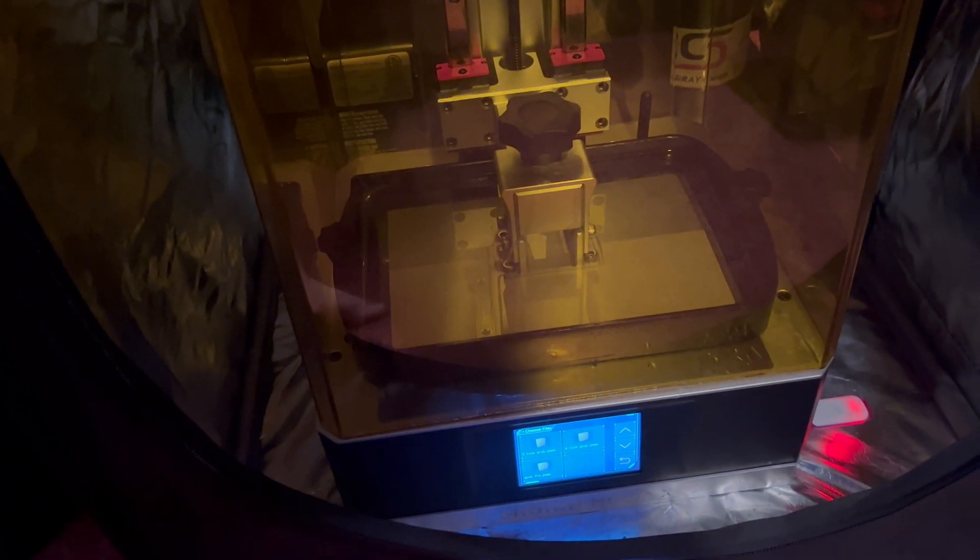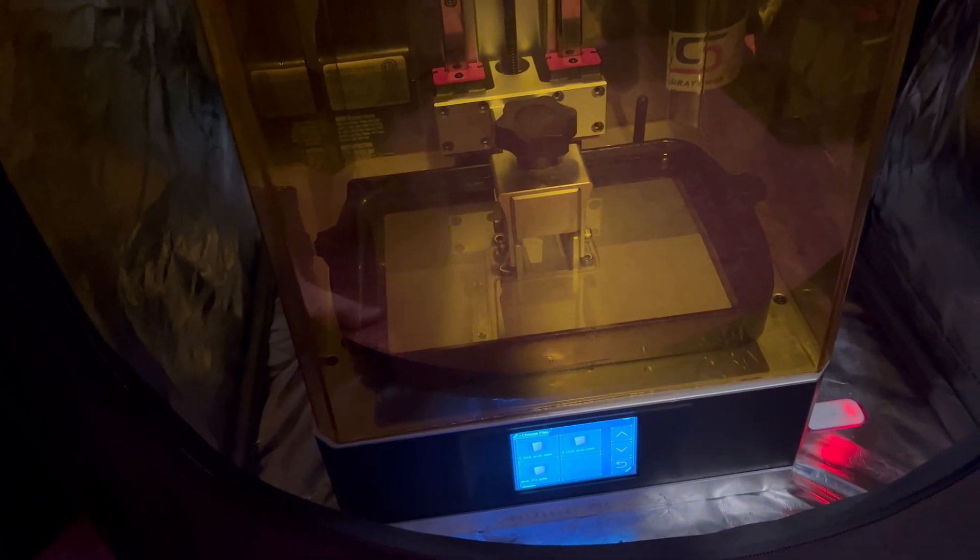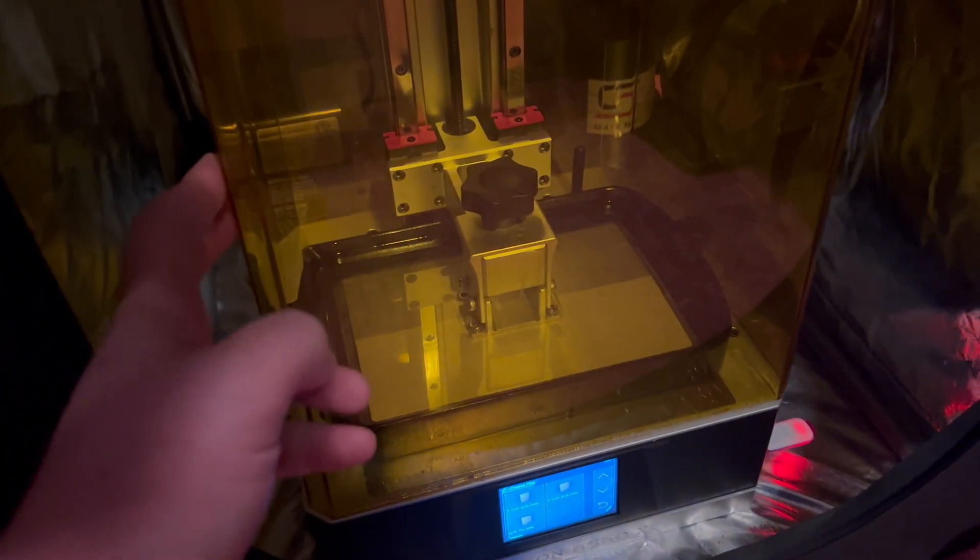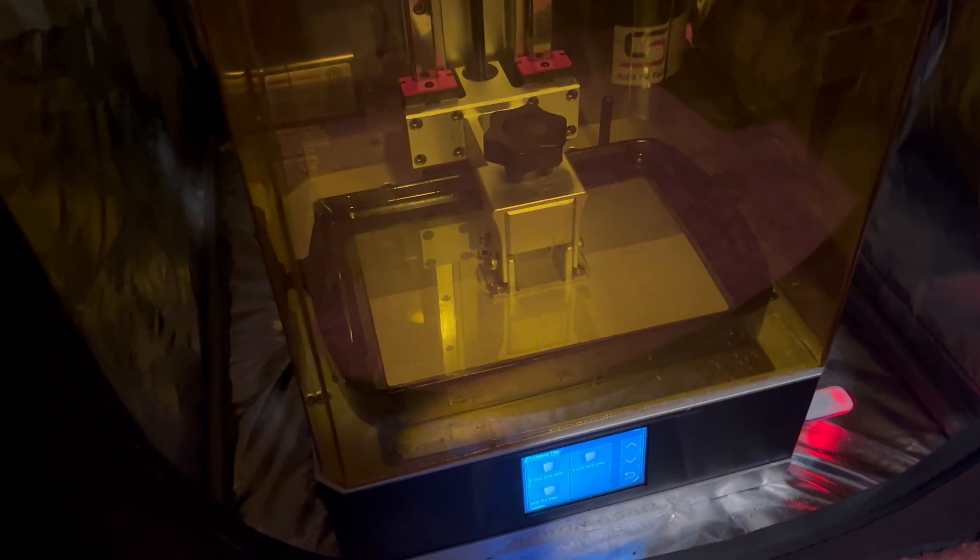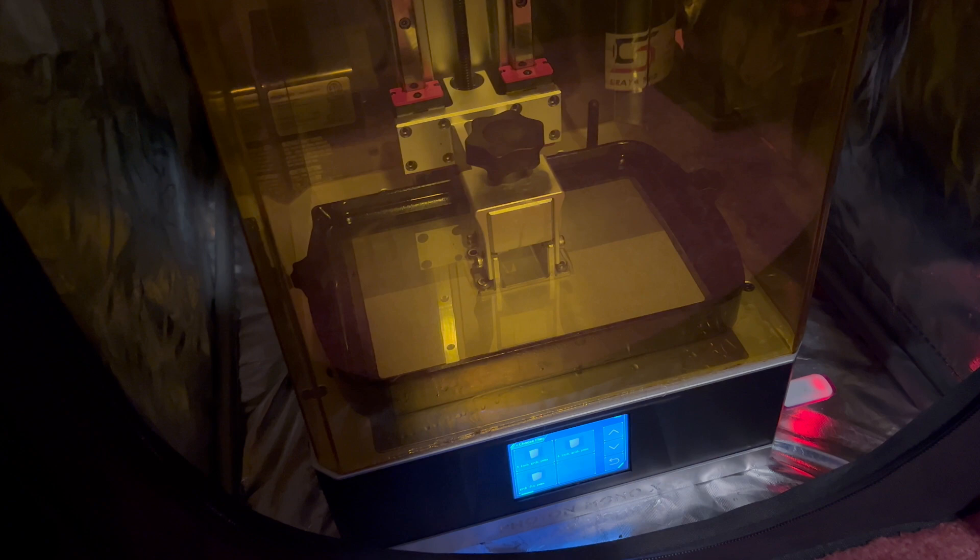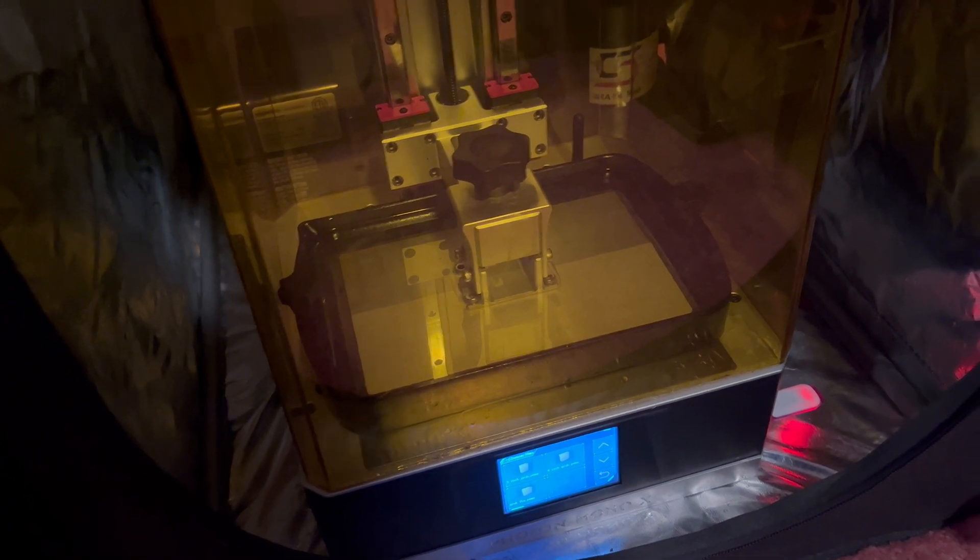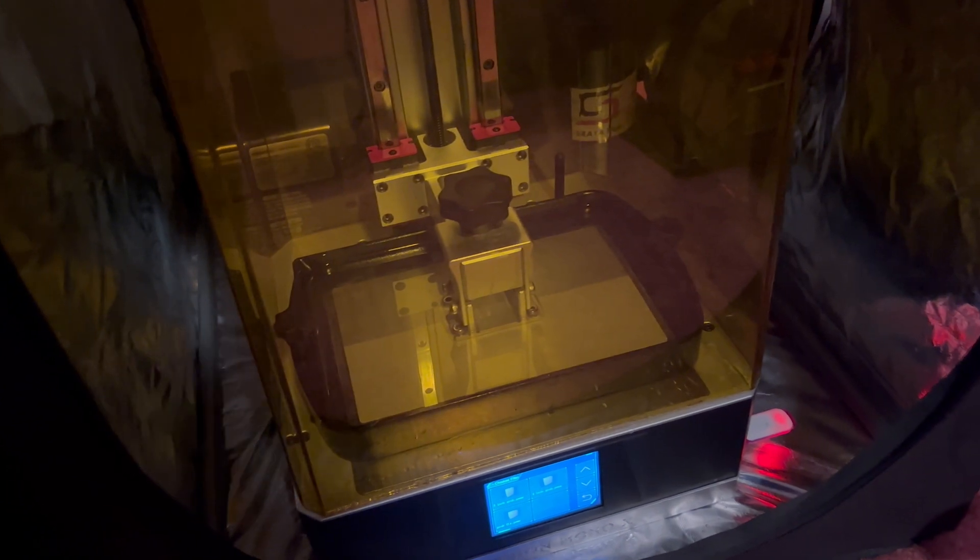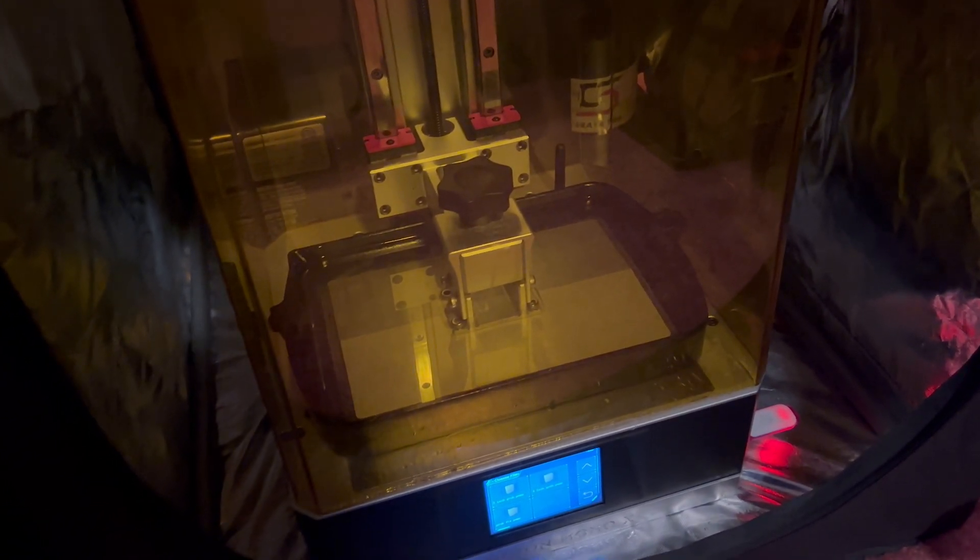Welcome back to part three of our guide for resin 3D printing your own soft plastic lure molds. In part one we went over the basics of resin printing and why you would want to do it for making lures. In part two I showed you how to take a file from the computer and get it ready to make into an actual three-dimensional object using this machine. And in part three it's time to actually make one.